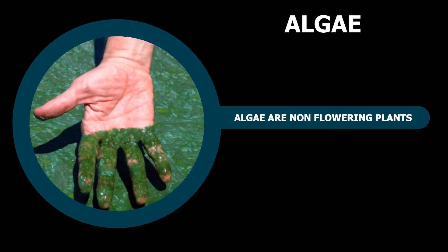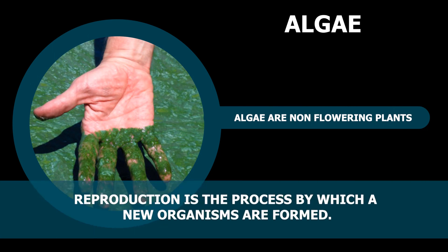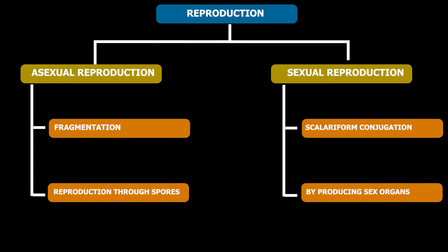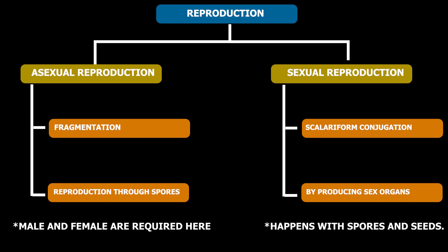Algae are non-flowering plants. In this video, we will learn about reproduction in algae. Reproduction is the process by which new organisms are formed. Reproduction can be of two types: sexual reproduction and asexual reproduction. For sexual reproduction to take place, both male and female are required, but asexual reproduction takes place through spores etc. Algae reproduce both sexually and asexually.